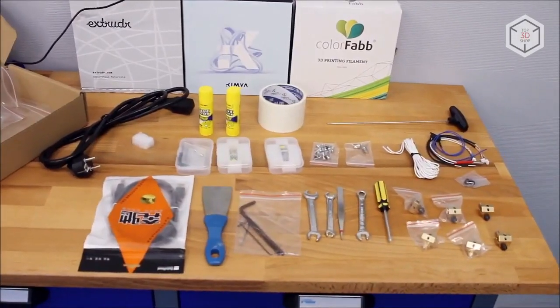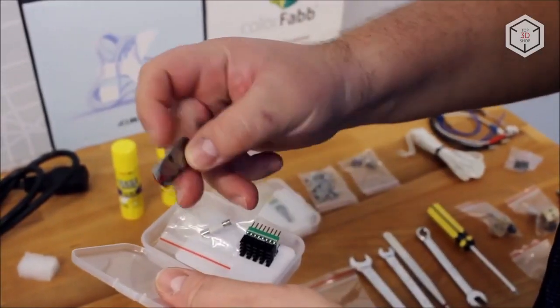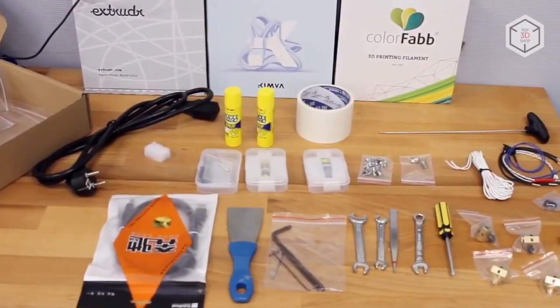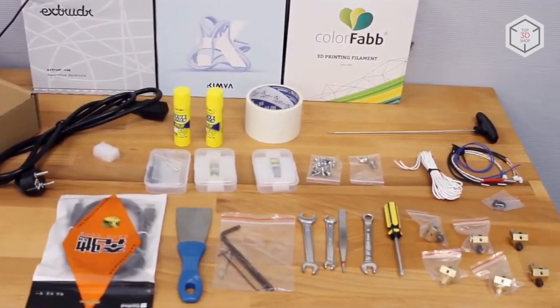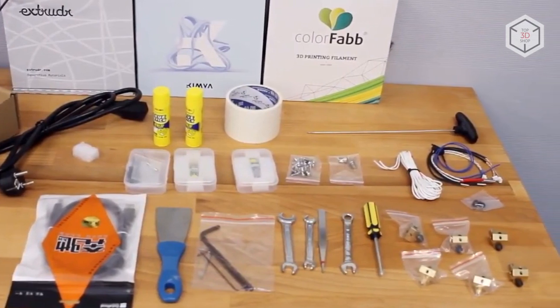In addition to the standard set of disposable tools and a flash drive, the Peak 300 package also includes spare drivers, spare screws of different diameters, and a pair of BL touch sensors, which are used for automatic platform calibration.